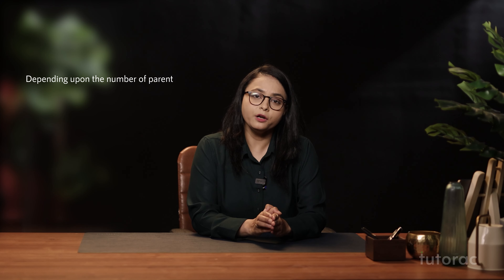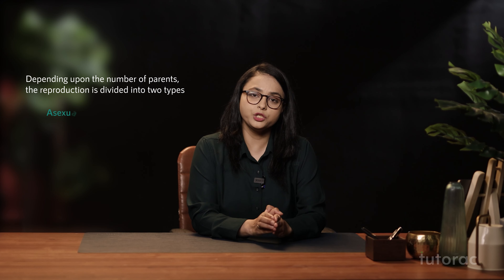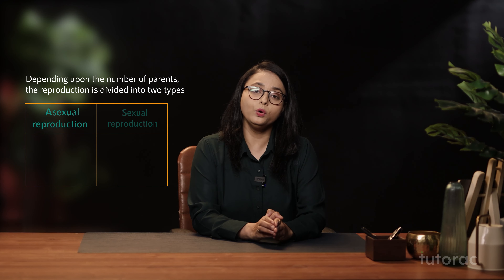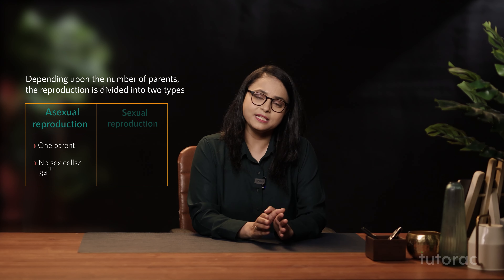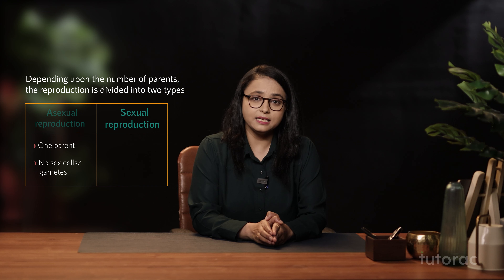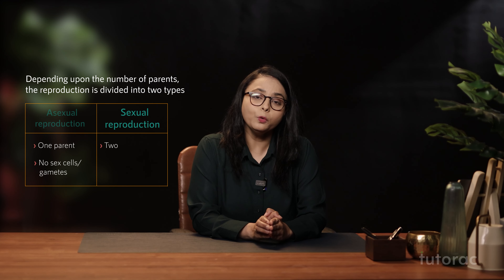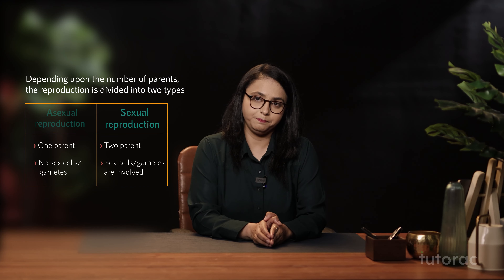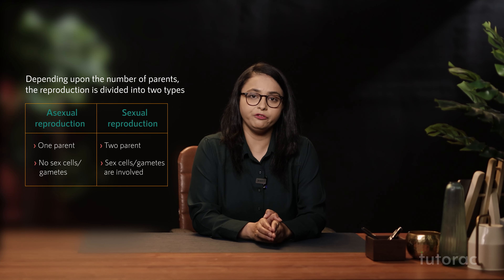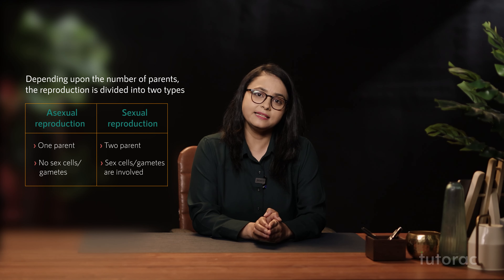On the basis of the number of parents, reproduction is of two types: asexual reproduction and sexual reproduction. In asexual reproduction only one parent is involved and there is no involvement of sex cells or gametes, whereas in sexual reproduction two parents are involved and there is the involvement of sex cells. This is the major difference between asexual and sexual reproduction.